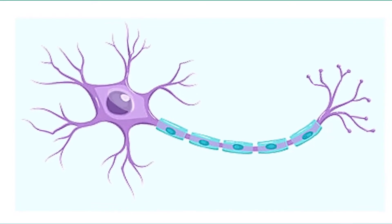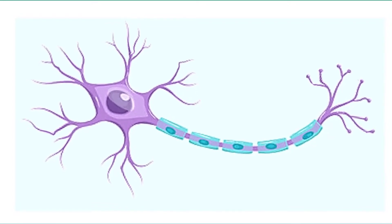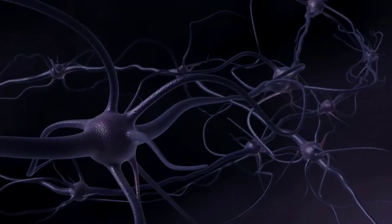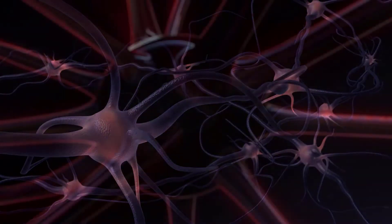but then the activity along the afferent fiber gradually declines because of synaptic fatigue. Phasic receptors are fast to adapt, whereas tonic receptors are slow to adapt.